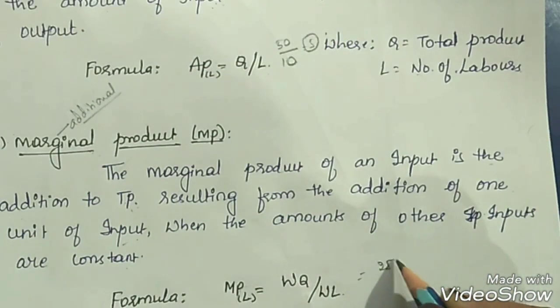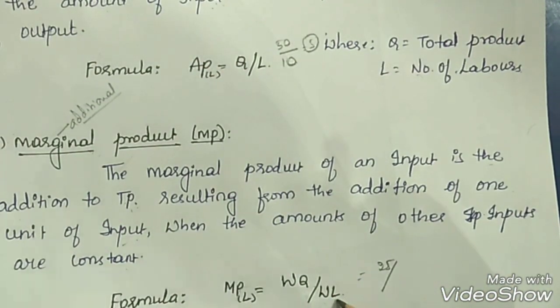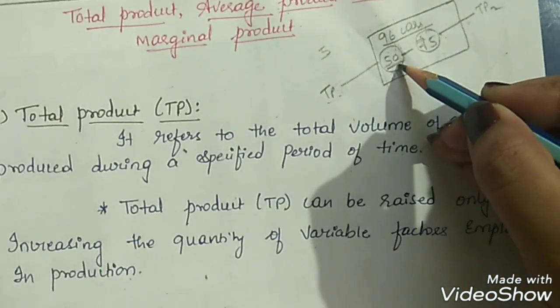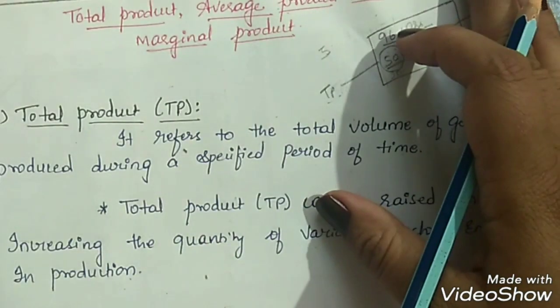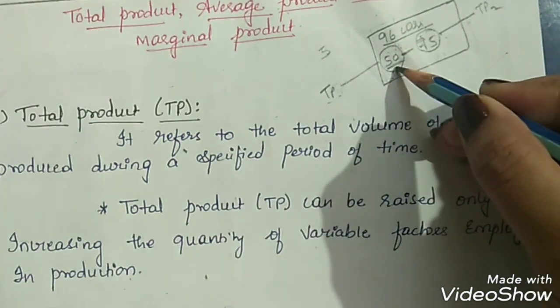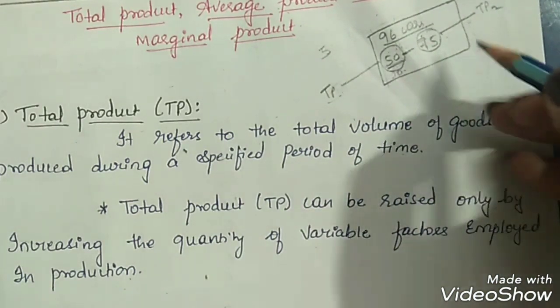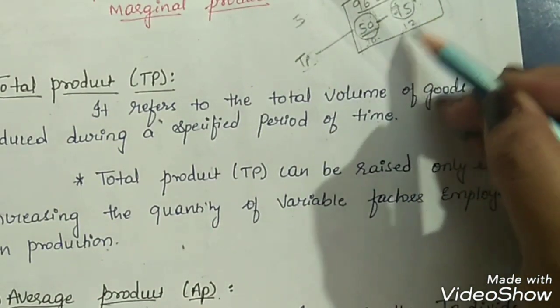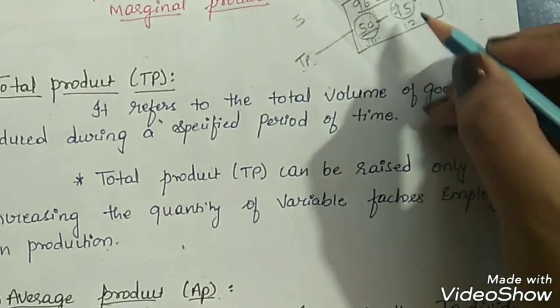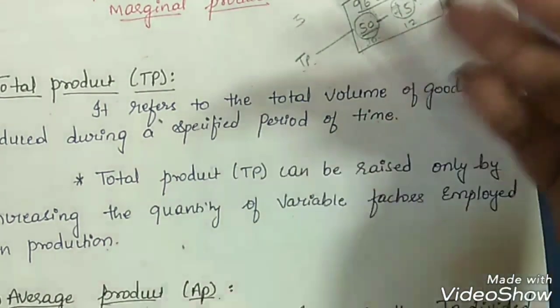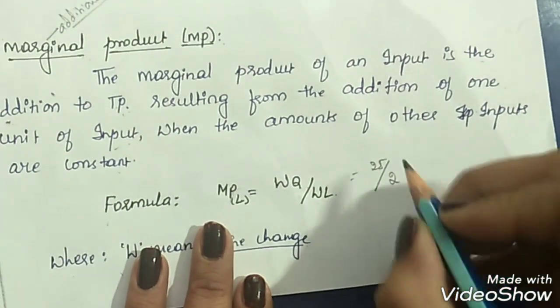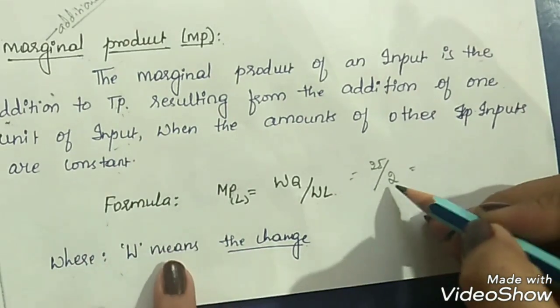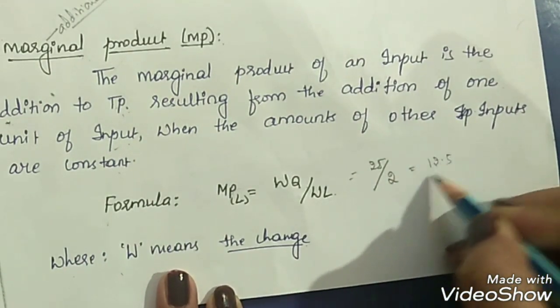So delta Q is 25. We used 10 labors to produce 50 units of cars, and now we are increasing our labors from 10 to 12 to produce 75 cars. The change in labor is 2, not 12. So delta L equals 2, and 25 divided by 2 gives us 12.5, which is our marginal product.